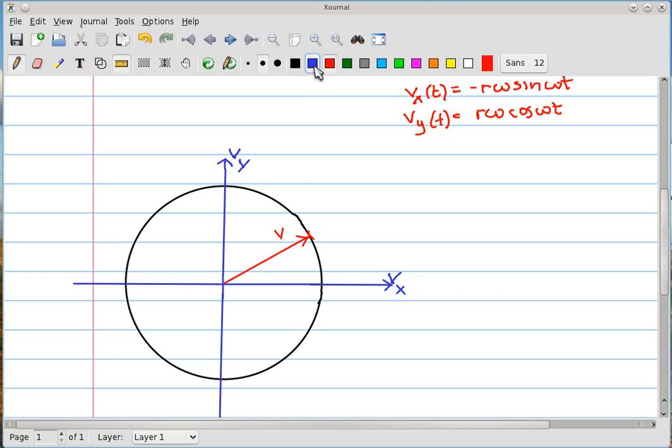So here is my velocity vector. It's a tangential velocity. It has an x component, which we'll draw out to there, and label vx. It has a y component. We'll label that vy.